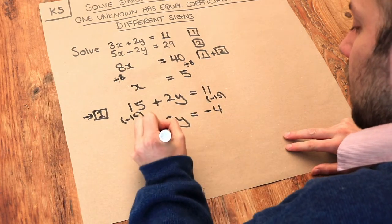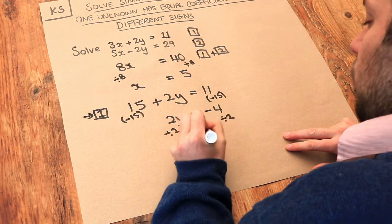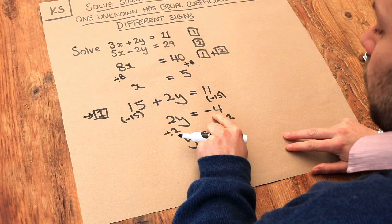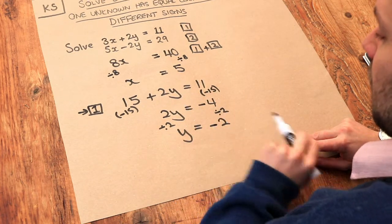And then we can divide both sides by 2 to get rid of that 2 in front of the y. And that gives you y equals, well, minus 4 divided by 2 is negative 2, because a negative divided by a positive is negative.